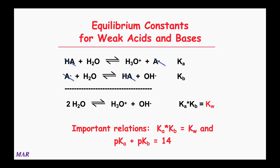If you have a weak acid and its Ka, and its conjugate base with its Kb, then Ka × Kb equals Kw — but they must be conjugates. For example, acetic acid and acetate, or ammonia and ammonium. You couldn't use acetic acid and ammonium together — they're not conjugates of each other. Just like H₃O⁺ × OH⁻ = Kw and pH + pOH = 14, you can do the same here: pKa + pKb = 14. We'll use this a lot going forward.